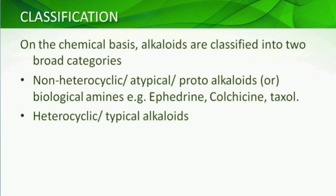Classification by chemical nature: alkaloids can be classified into two categories. The first is non-heterocyclic, or atypical proto-alkaloids, also called biological amines. Examples include Ephedrine, Colchicine, and Taxol.